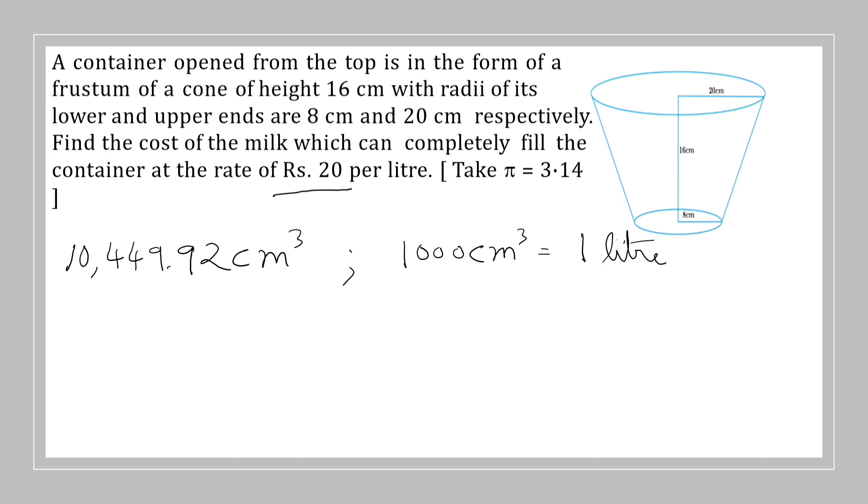So 10,449.92 cm³ means how much liters? This number divided by 1000. 10,449.92 divided by 1000, three places here, so point shifts to here, means 10.44992 liters.